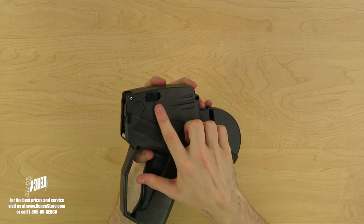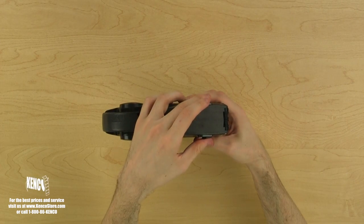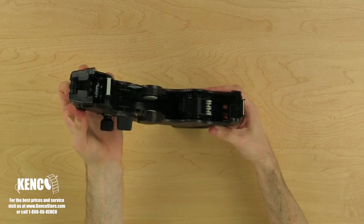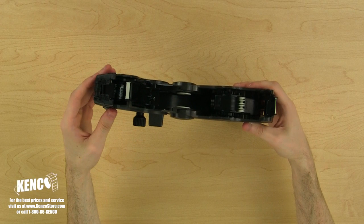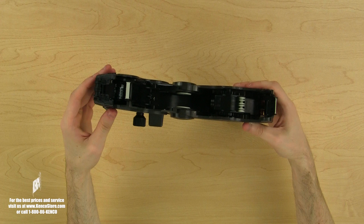On each side of the gun, you will find a latch. These latches will open the upper housing assembly. Let's pull both of those latches towards the back of the gun and lift the upper housing assembly so we can take a peek inside.